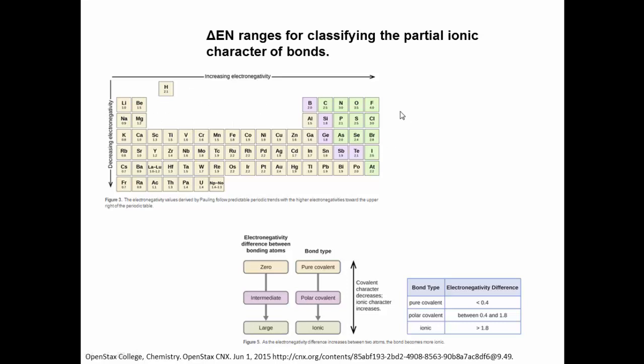Electronegativity increases as you go across the periodic table and decreases as you go down. These are the Pauling electronegativity scales. The Pauling electronegativity scale factors in both electron affinity and ionization energy. And you can see that fluorine is the most electronegative atom. Oxygen, sulfur, and chlorine are also very electronegative.